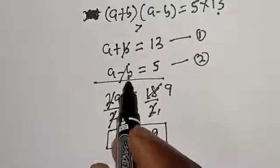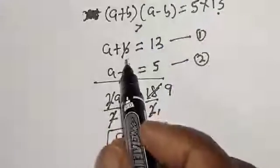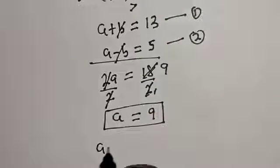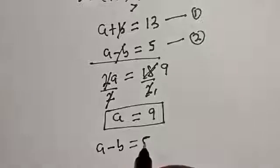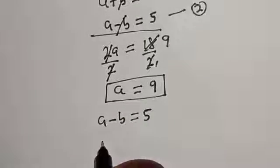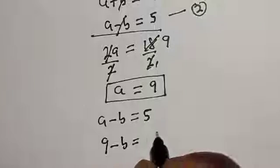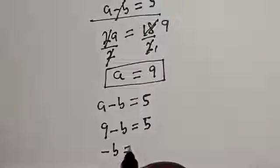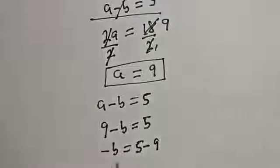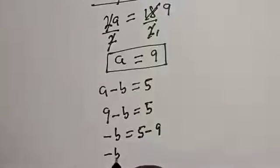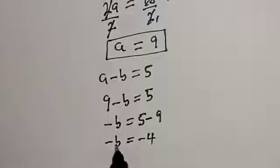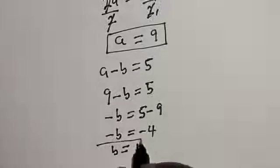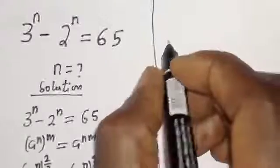Now we can solve for b using equation 2: a minus b equals 5. Substituting a equals 9, we get 9 minus b equals 5, so minus b equals 5 minus 9, which gives minus b equals minus 4, therefore b equals 4.